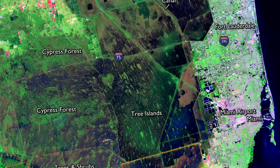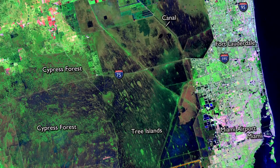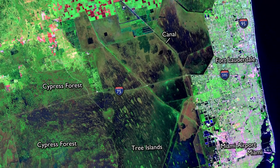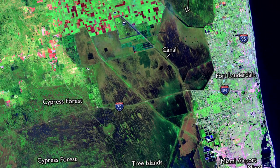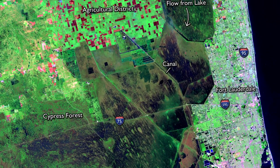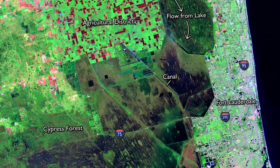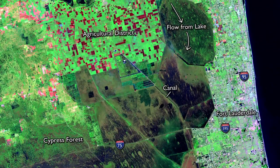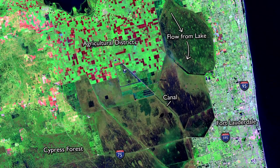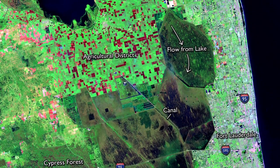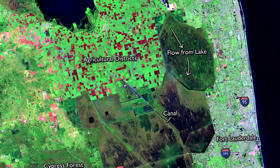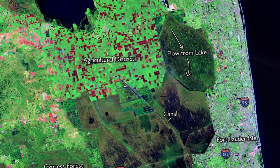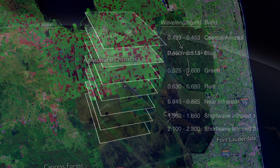We call certain combinations of wavelengths false color images because they do not replicate what we see with the naked eye. Yet they allow us to create images where we can highlight or enhance different surface features.